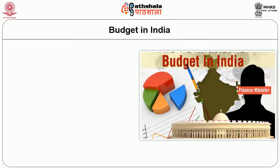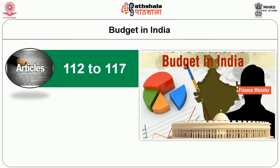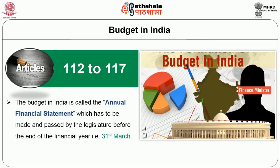Characteristics of Indian Budgetary System: India, being one of the oldest civilizations, also possesses one of the oldest administrative systems, and as such one of the oldest budgetary systems. However, the present-day budgetary process is the legacy of the British. As such, even after independence, the basic traits of the Government of India Act 1935 were retained. However, necessary changes were made keeping in mind the national commitments and values. Articles 112 to 117 of the Indian Constitution deal with budget. According to Article 112, the budget in India is called the Annual Financial Statement, which has to be made and passed by the legislature before the end of the financial year, i.e., 31st March.